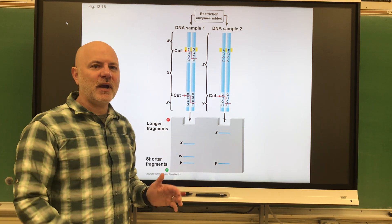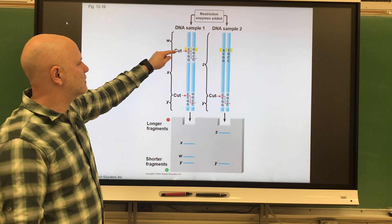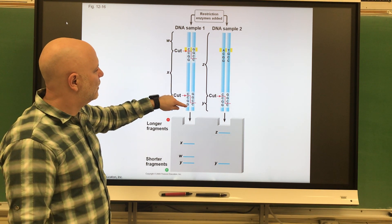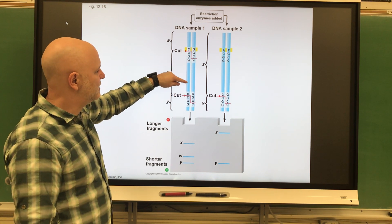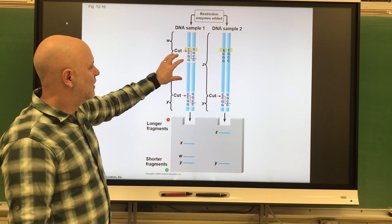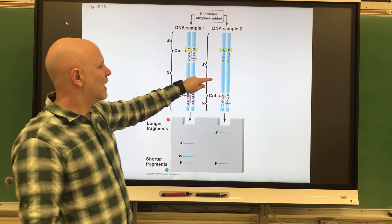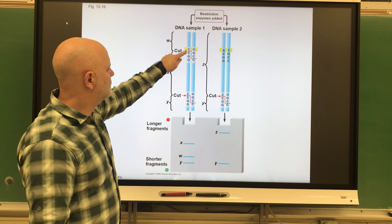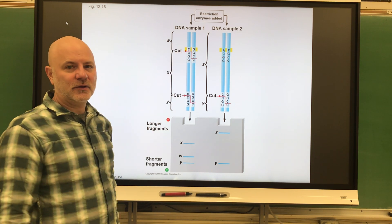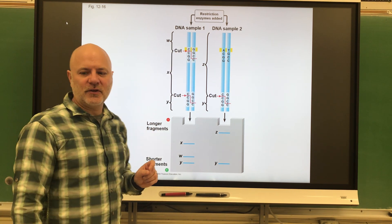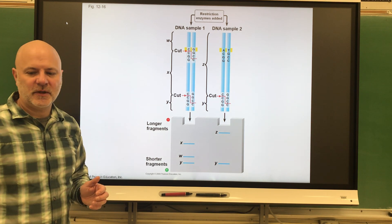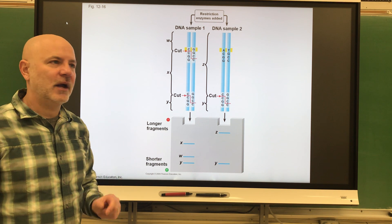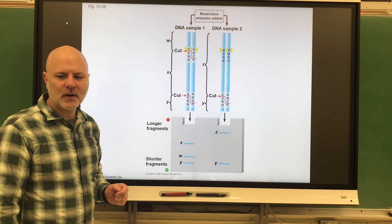When we expose DNA to this restriction enzyme, in this case, it cuts the DNA two times, which creates three molecules. Over here, it just cut it once, so we have two molecules. Each of those molecules is known as a restriction fragment - DNA molecules produced from a longer DNA molecule cut up by a restriction enzyme.